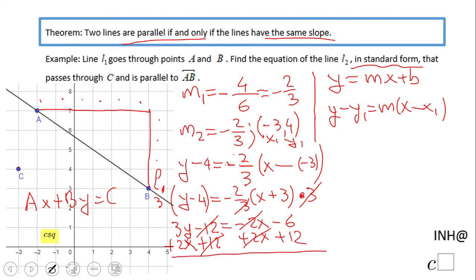So what do we get here? We get 2x + 3y = 6 (because -6 + 12 is positive 6). That is the answer: 2x + 3y = 6.